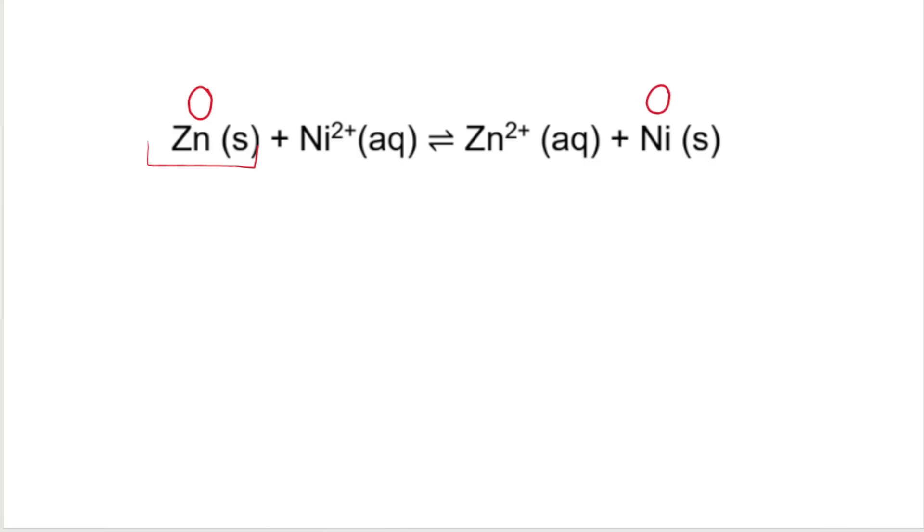And then if we have a charged element, like here, an ion, the oxidation number is equivalent to the charge. So plus two for the nickel ion and plus two as well for the zinc ion. Then what we would do is we would look at zinc on the left-hand side compared to zinc on the right-hand side. What happened to the oxidation number? It went from zero to plus two.